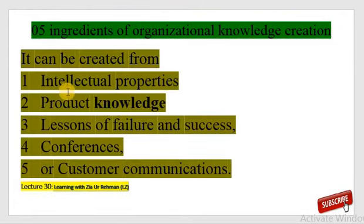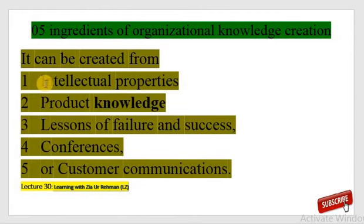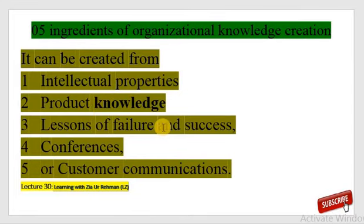At the organizational level — whether as an employee, owner, higher management, middle management, or lower management — there are five ingredients for organizational knowledge creation. Number one is intellectual properties available in, owned by, or known by the company. Then product knowledge, lessons of failures and successes, and conferences or customer communications. These are five ways through which organizations can learn from their own system and environment about knowledge creation.